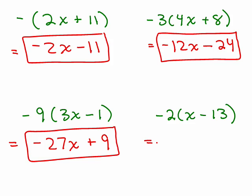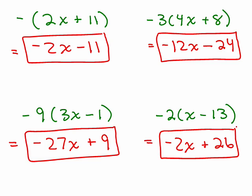And the last one, negative 2 times X will be a negative 2X. And what do I have here? I've got a negative and another negative on the inside. When I multiply, that'll be a plus 26. Practice these a lot. These are the ones that are very confusing for people.